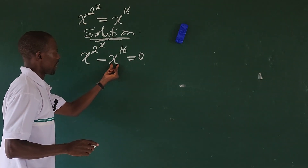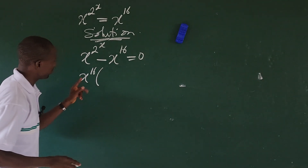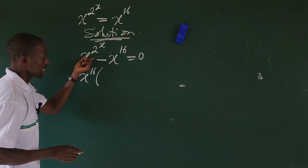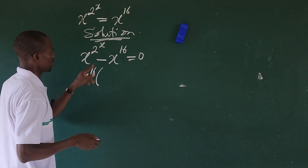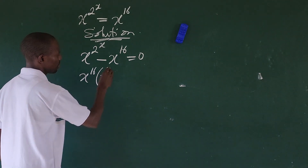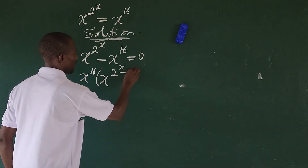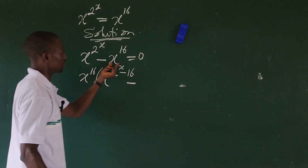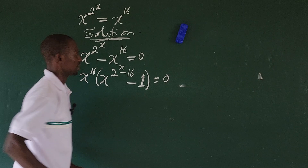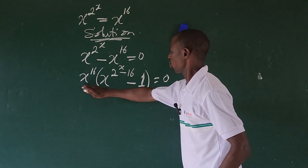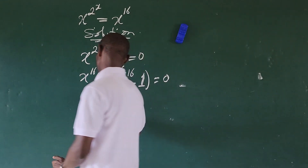I want to factor out x to the power of 16 from this expression. We get x to the power of 16, times the bracket: x to the power of (2^x minus 16), minus 1, equals zero. From here we can equate each factor to zero using the zero product rule, giving us Case 1 and Case 2.